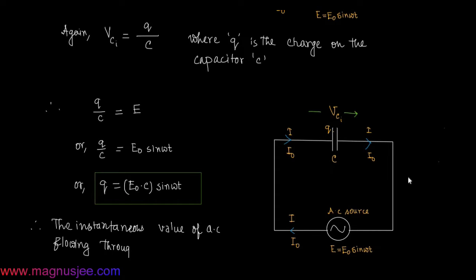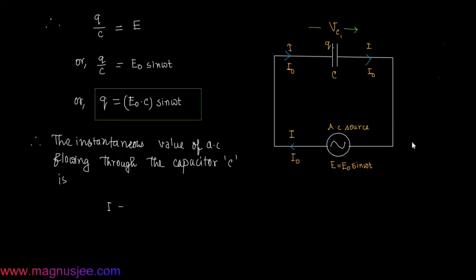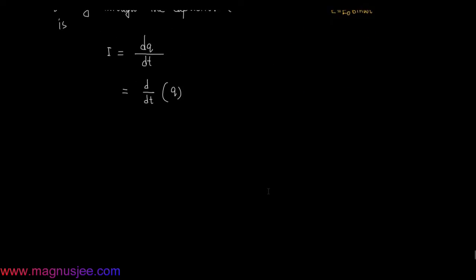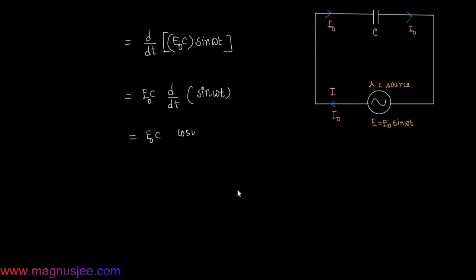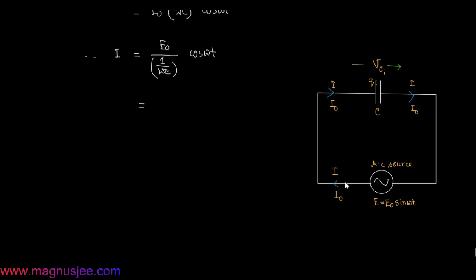The instantaneous alternating current flowing through the capacitor of capacitance C is given by i = dq/dt. Substituting the expression for q, we get i = d/dt[e0·C·sin(ωt)] = e0·C·cos(ωt)·ω = e0·ω·C·cos(ωt). Therefore, i = (e0 / (1/ωC))·cos(ωt) = i0·cos(ωt).